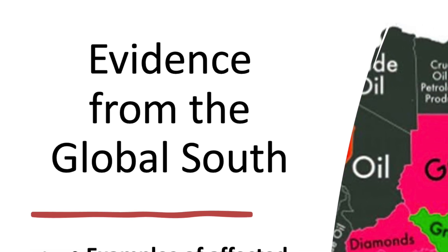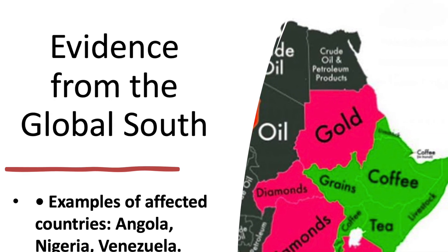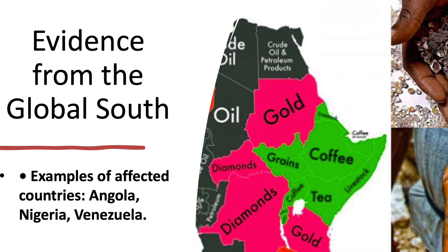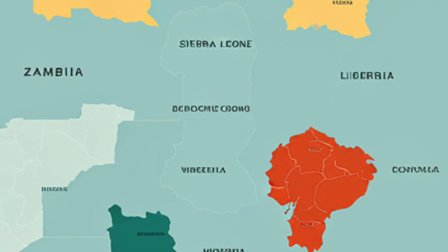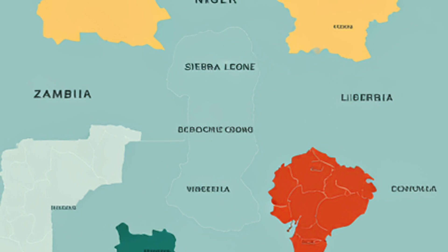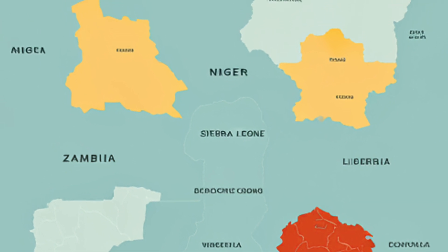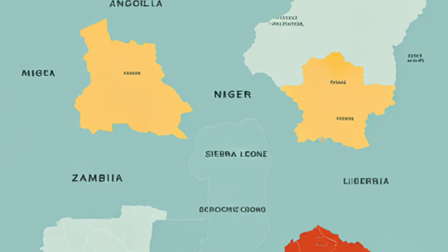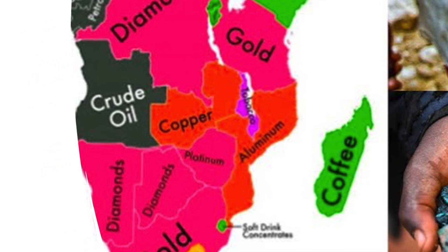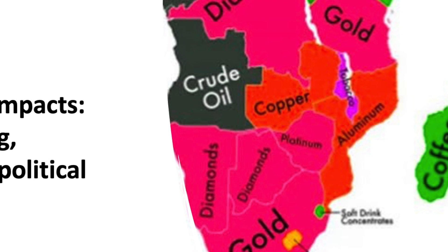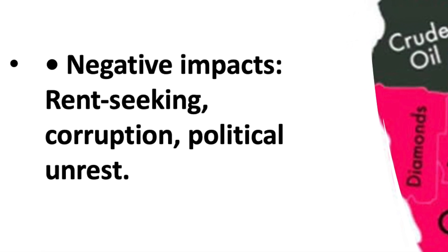If we look at evidence from empirical studies on the global south, we see mixed findings. A significant number of empirical studies find that many natural resource-rich countries in the global south have performed poorly in terms of transferring the abundance of natural resources towards desirable economic development. Examples include countries like Angola, Niger, Zambia, Sierra Leone, Liberia, Congo, Venezuela, Nigeria, and Ecuador. In these countries, research shows that the abundance of natural resources may have incentivized economic and political actors to follow rent-seeking behaviors and deteriorated institutional quality and promoted corruption.